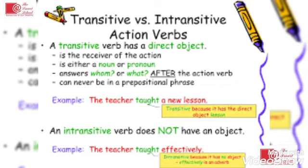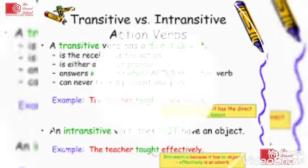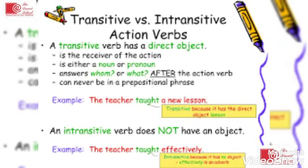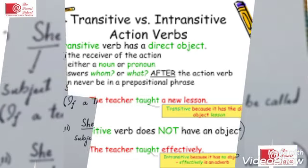For further examples: 'The teacher taught a new lesson' — here 'taught' is a transitive verb because it has a direct object, 'new lesson.' In contrast, 'The teacher taught effectively' — here 'effectively' is an adverb, not an object, so this is an example of an intransitive verb with no object present.